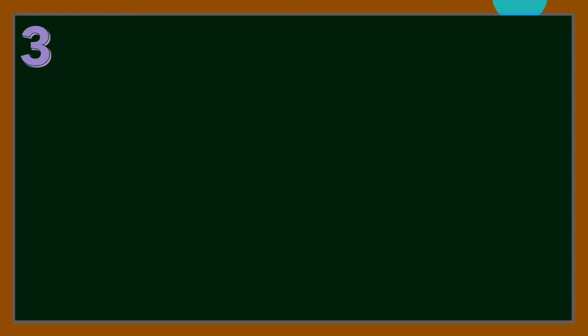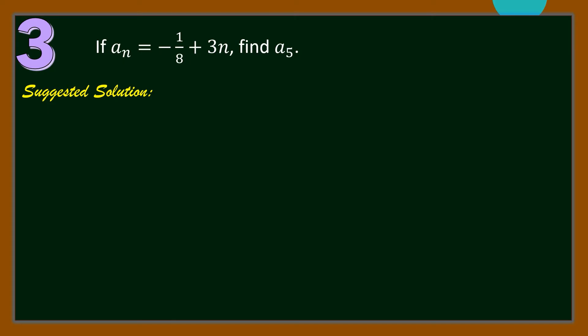Question number 3: If A sub N is equal to negative 1 over 8 plus 3N, find A sub 5. For our solution, we have N is equal to 5. Hence, A sub 5 is equal to negative 1 over 8 plus 3 times 5, which gives us negative 1 over 8 plus 15, or 15 minus 1 eighth. This is 14 and 7 eighths.